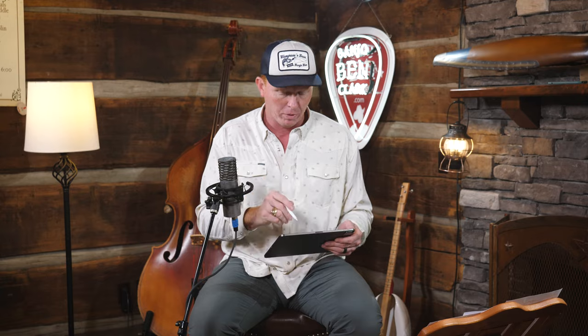Cripple Creek, a single solo, is going to be 32 measures. But instead of A, A, B, B, it's going to be A, B, A, B. So let's look at that right quick.